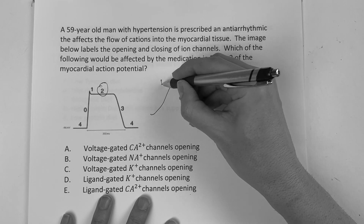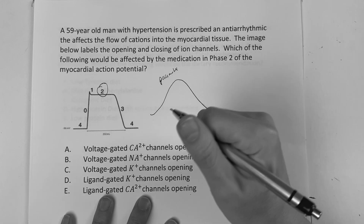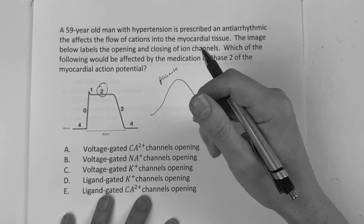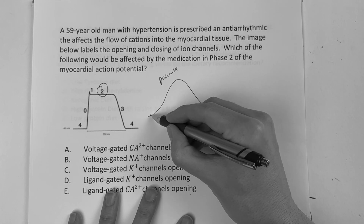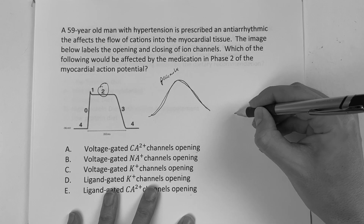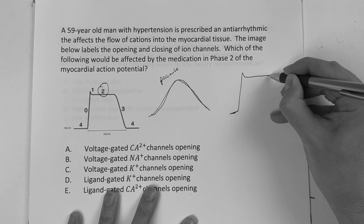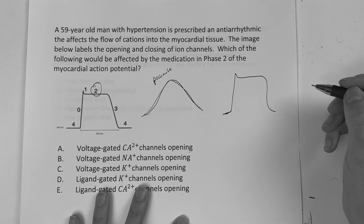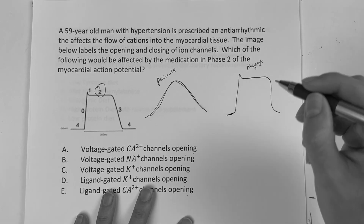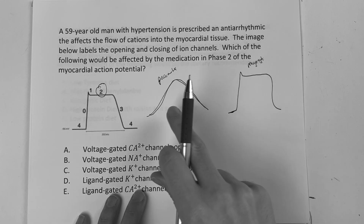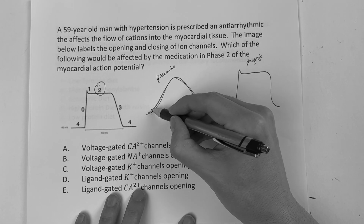As a brief review, we know that we have the pacemaker cell — that's kind of the lub-dub that gets the heart its tick, per se. And then there's the cardiac myocyte. If you see where it goes up real quick and then there's this long pause and goes down, that's more the cardiac myocyte. You have to know the difference between the two.